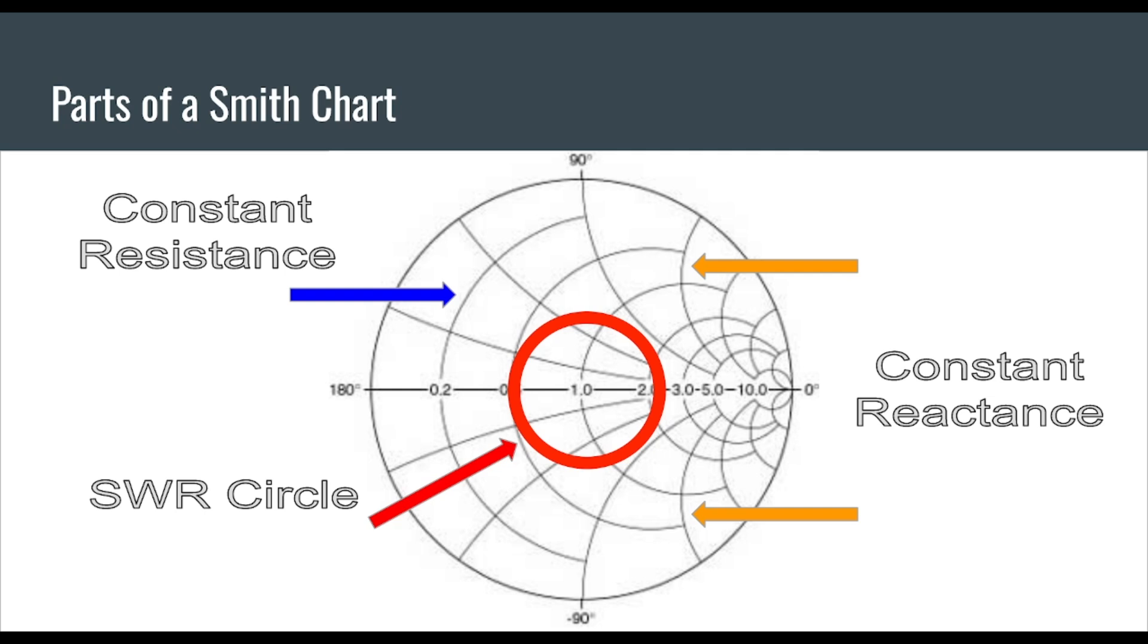On the right hand side I've got two orange arrows, one pointing towards our inductive constant reactance circle and the one on the bottom is pointing towards our capacitive constant reactance circle. Some people will call these arcs but they're actually circles that are not fully on the Smith Chart. In the center in red we have an SWR circle and we're going to do an exercise where we actually create one of these SWR circles.